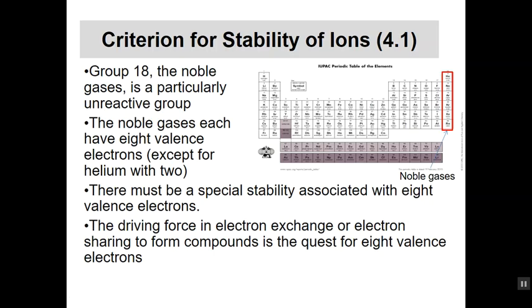So the first part we'll look at is the stability of ions. If we go back and think about the periodic table, looking at the noble gases—helium, neon, argon, krypton, xenon, radon—those guys are particularly unreactive, meaning whatever they've got going they like. They're in group 18, which means they each have eight valence electrons, with the exception of helium which only has two electrons altogether. There must be some sort of special stability associated with those eight.